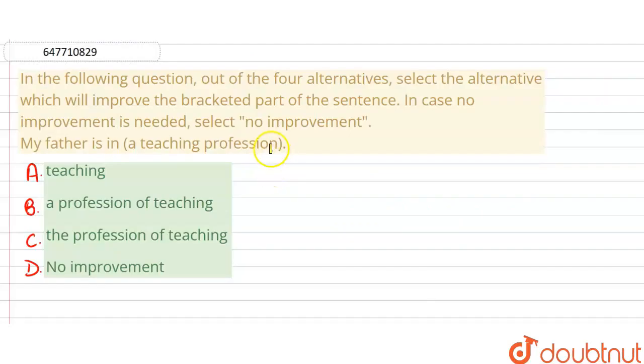Hello everyone. The question is: in the following question, out of four alternatives, select the alternative which will improve the bracketed part of the sentence. In case no improvement is needed, select no improvement. What is the direction? The direction has four options.